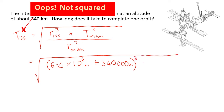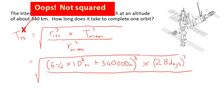Then we multiply by the Moon's period squared. The Moon takes approximately 28 days to orbit the Earth — we don't have to use standard units, just consistent units, so 28 days is fine, but don't forget to square it. We divide by the Moon's average distance from Earth, which is 3.85 × 10⁸ metres, cubed. Now we have everything we need.